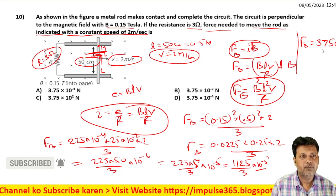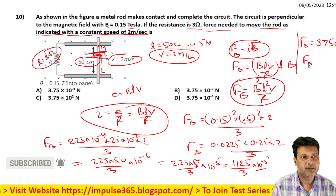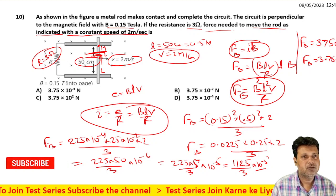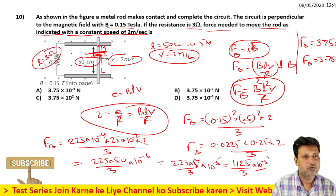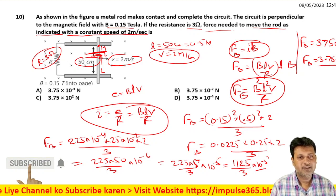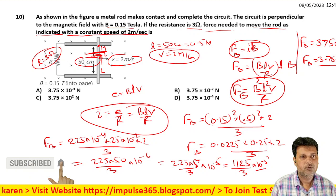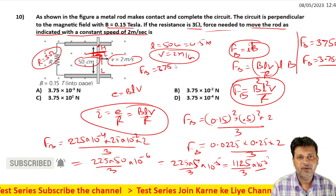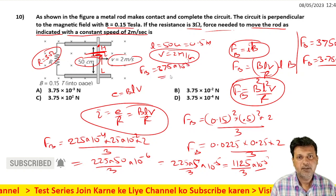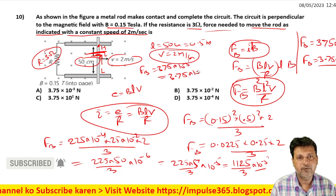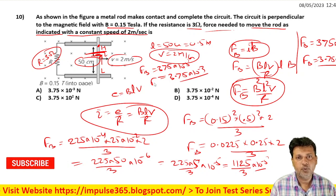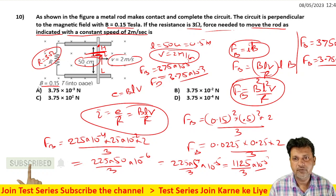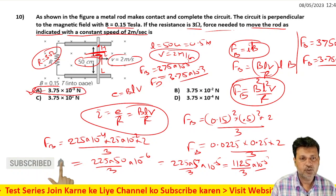So the magnetic force equals 3.75 times 10 to power minus 5 Newtons. Checking the options, the appropriate answer is 3.75 times 10 to power minus 3 Newtons. Next question.